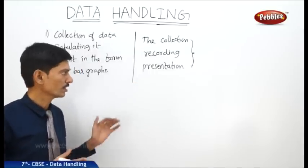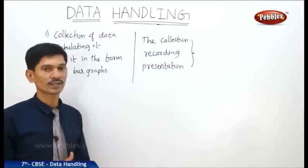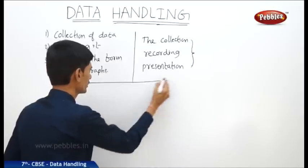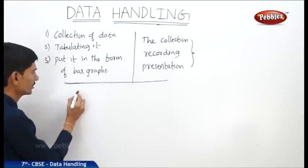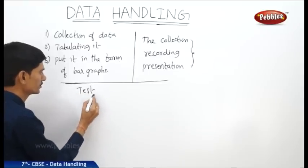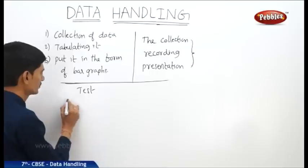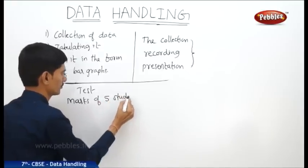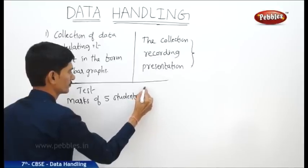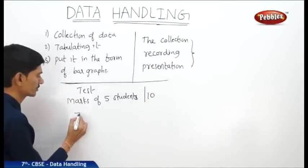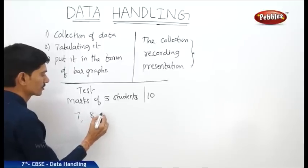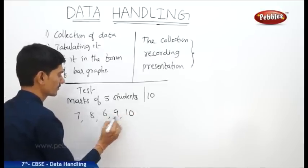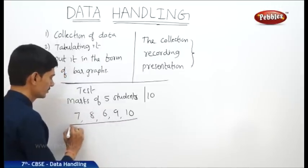Now you are already familiar with several kinds of data, and this data you can observe through newspapers, magazines, or television. For example, if you take the data in a particular test, the 5 students have got the marks out of 10. For example, one student got 7 marks, the other student got 8 marks, the third student got 6 marks, the fourth student got 9 marks, and the fifth student got 10 marks. Now this is also data collected from the students.